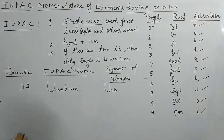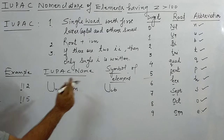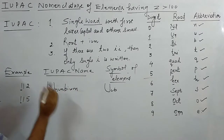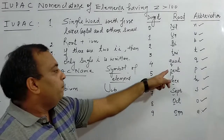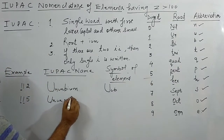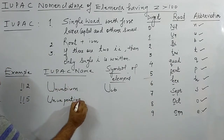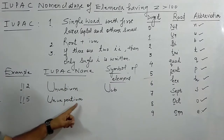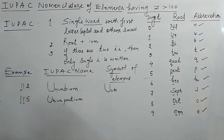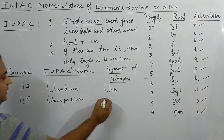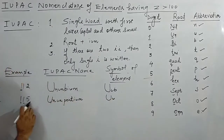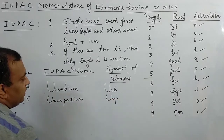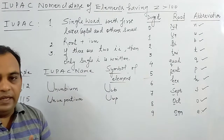Second example: atomic number 115 — digits 1, 1, 5. For 1 → un, again 1 → un, for 5 → pent. Add IUM at the end: un-un-pent-ium, giving IUPAC name Ununpentium. For the symbol: un → U, un → u, pent → p, so the symbol is Uup.